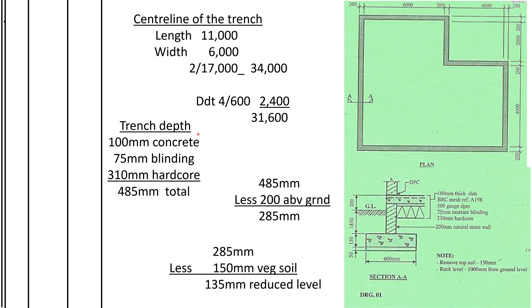Now we shall go to the trench depth. How do we calculate the trench depth? First, we shall add all these layers to know the depth of the reduced level. You shall take 100 millimeters of concrete, 75 millimeters blinding, plus hardcore at 310 millimeters — so the total thickness of the layers is 485. Then from 485 we shall reduce 200, which is above the ground, so we need to excavate 285 below the ground. We already removed 150 when we excavated the vegetable soil, so the reduced level depth is 285 minus 150, which is 135.